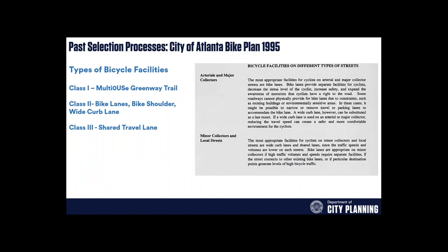Where have we been? I'm approaching this topic from where cities often get their guidance from. In 1995 was the first time the city ever passed and adopted a bike plan. We only said there were three types of classes of bike facilities: multi-use paths, bike lanes or bike shoulders or wide curb lanes, and shared travel lanes. The guidance hinted at connectivity — bike lanes are appropriate when they connect to other existing bike lanes — probably the first mention of network for us. On arterials and major collectors we were recommending bike lanes, and on anything else we were recommending wide curb lanes and shared lane markings.